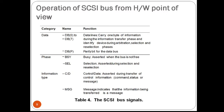Next, we shall see the operation of the SCSI bus from the hardware point of view. The SCSI bus signals are categorized into a table. The first category is data: lines DB0 to DB7 carry 1 byte of information during the information transfer phase and identify the device during arbitration, selection, and reselection phases. There is also DB(P), the parity bit for the data bus.